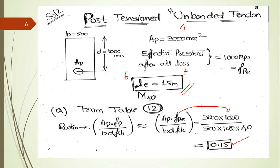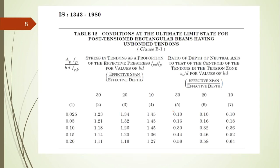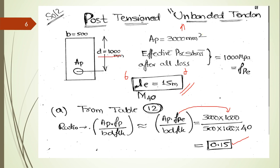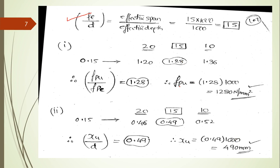For that reinforcement ratio you have to find the values of f_pu and f_pe, but first you need the effective span-to-effective depth ratio. Effective span = 15 × 1000 mm, effective depth = 1000 mm, so the ratio = 15.